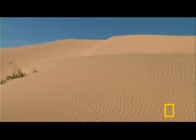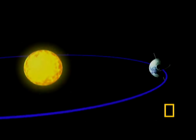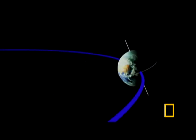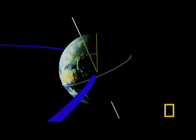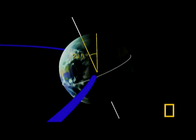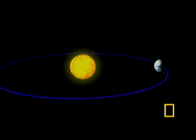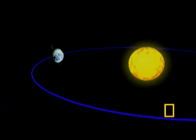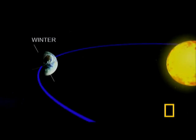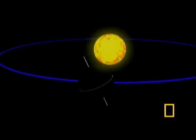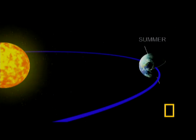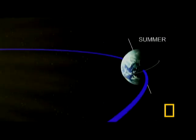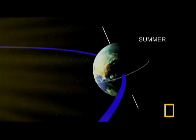Like all seasons, summer is the result of an astronomical fact of life: the Earth is tilted on its axis 23 and a half degrees. As the planet moves in its yearly orbit, that angle causes the position of the northern hemisphere to change relative to the Sun. In the winter it's tilted away from the Sun; in the summer it angles towards the Sun.